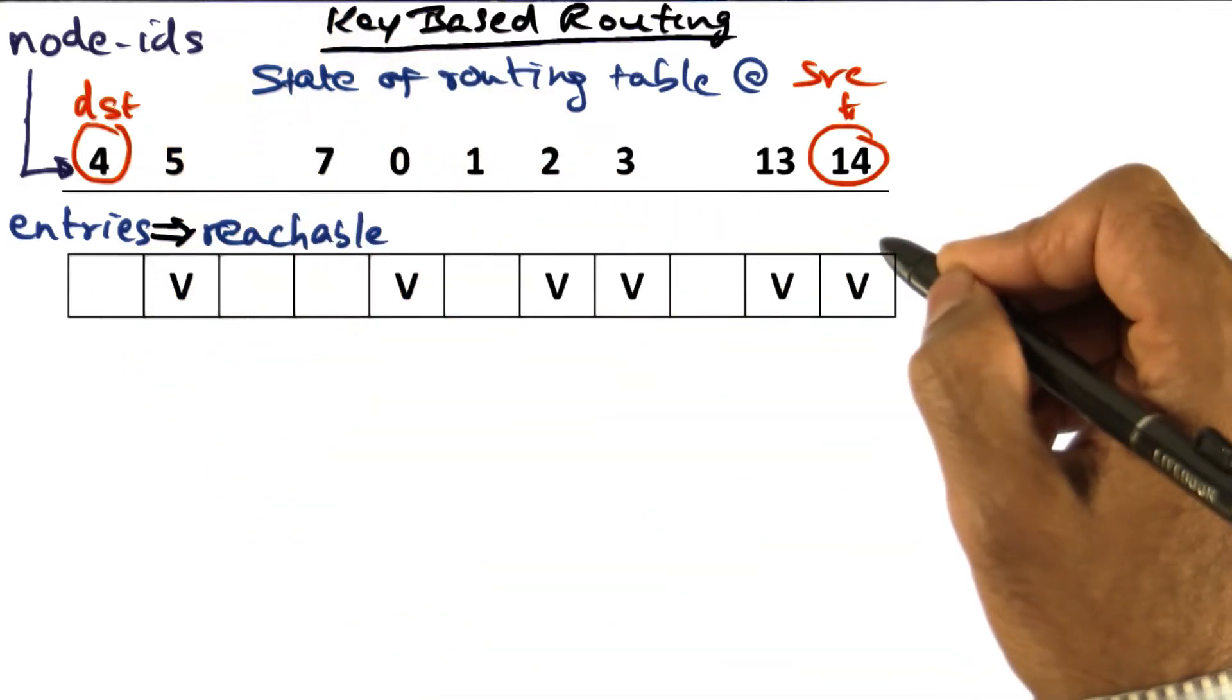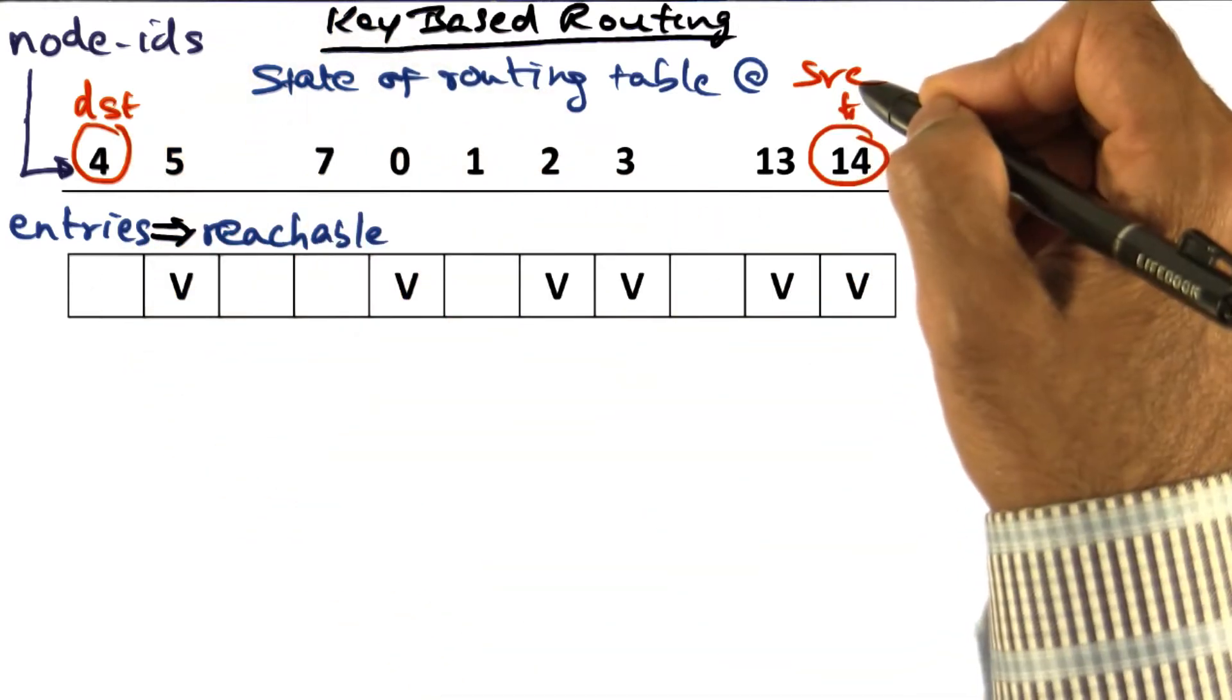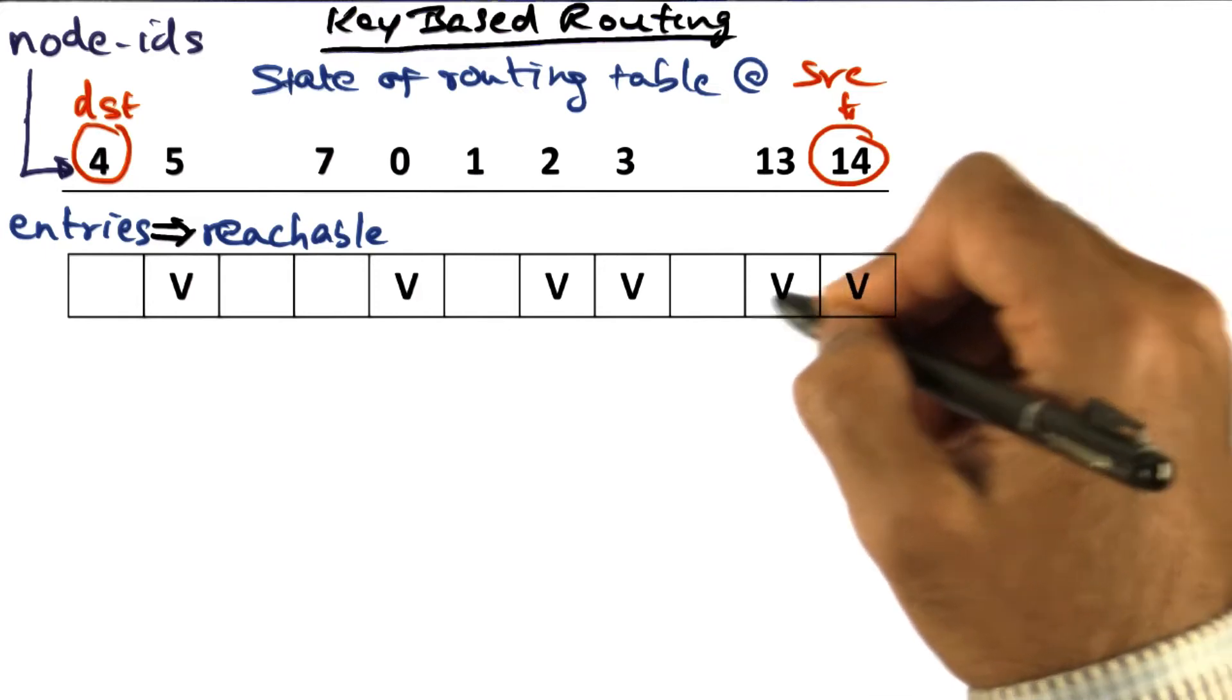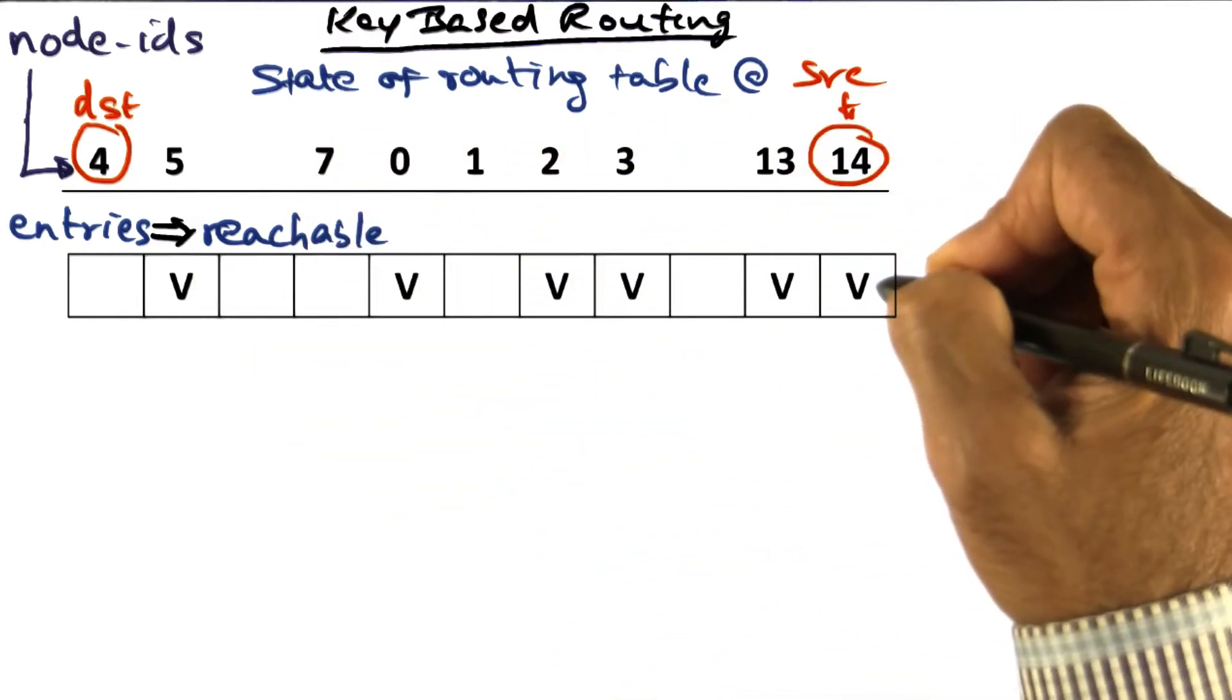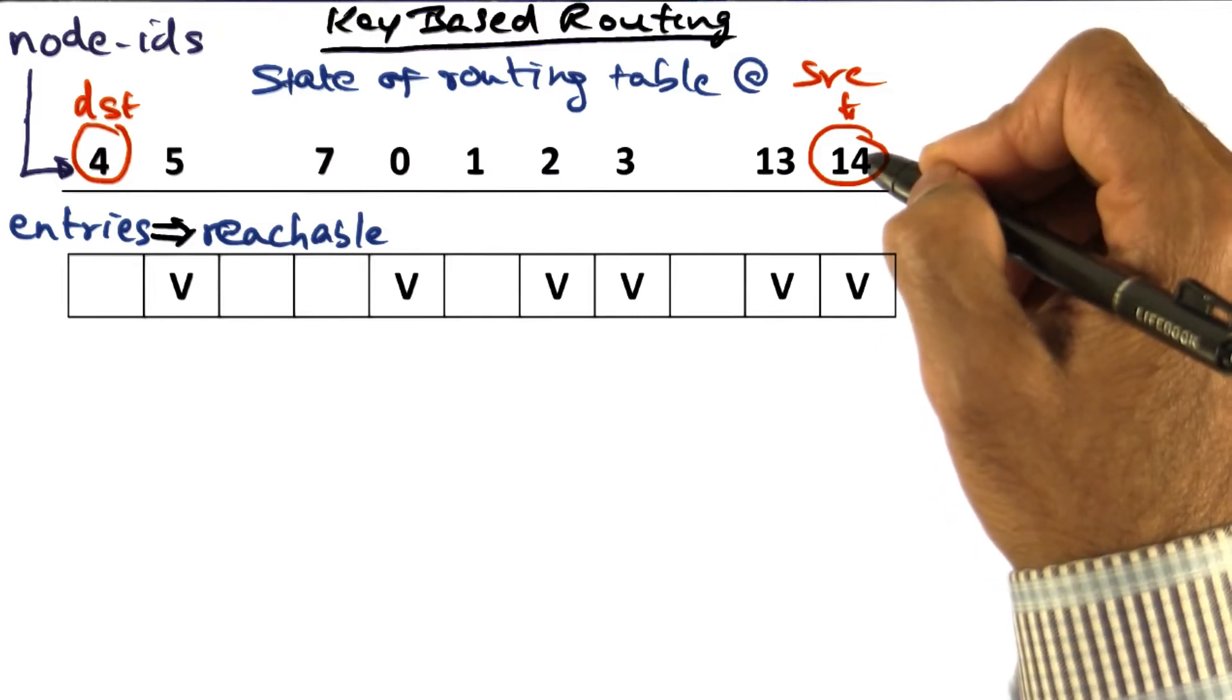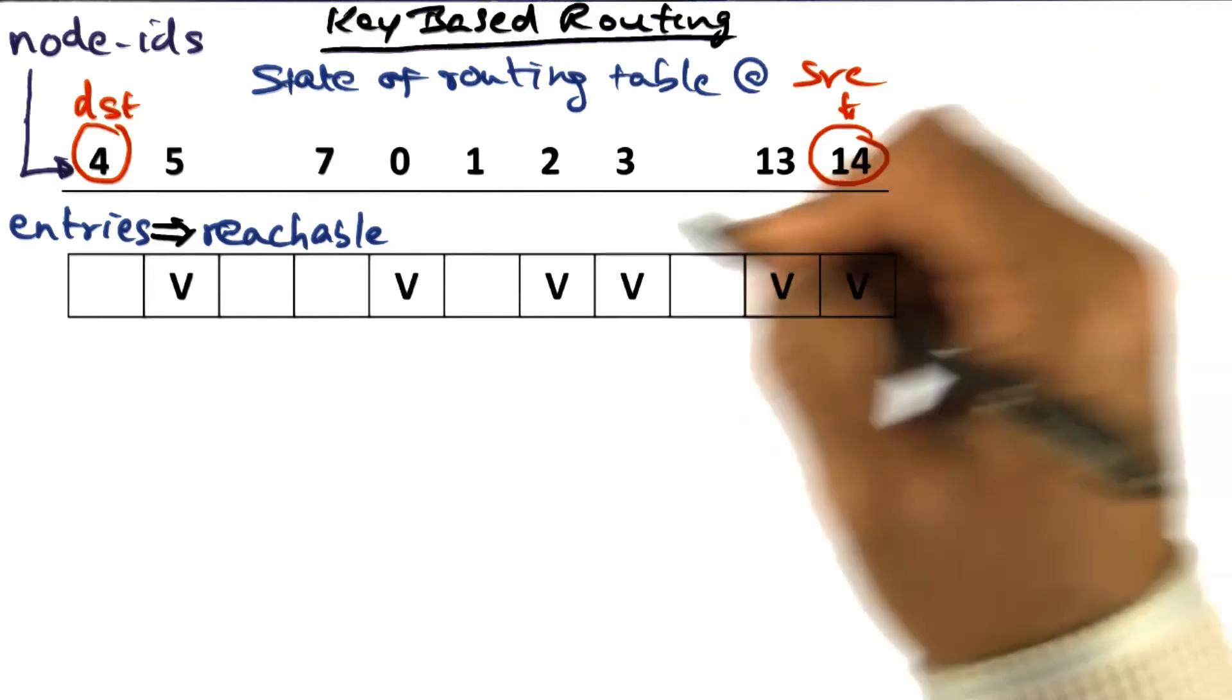What this table shows is the routing table at the source. In particular, the entries where you have a valid entry are the nodes that are reachable from node 14.